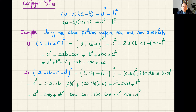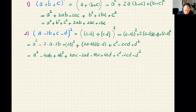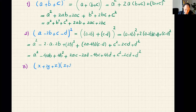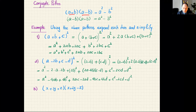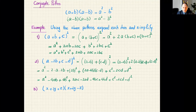The same idea applies to the conjugate pattern. Example three: multiply (x + 2y + z) by (x + 2y − z). The conjugate pattern seems to require exactly two terms, but a closer look reveals the pattern. Can you see how?